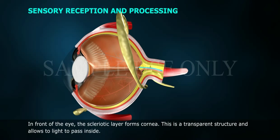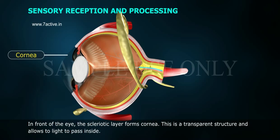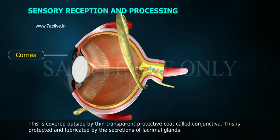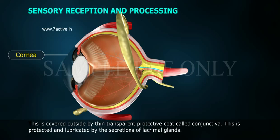In front of the eye, the sclerotic layer forms the cornea. This is a transparent structure and allows light to pass inside. It is covered outside by a thin transparent protective coat called the conjunctiva, which is protected and lubricated by the secretions of the lacrimal glands.